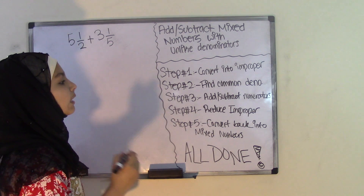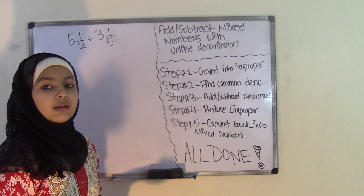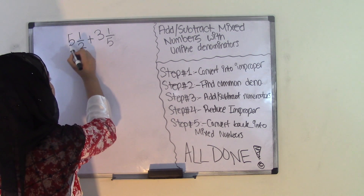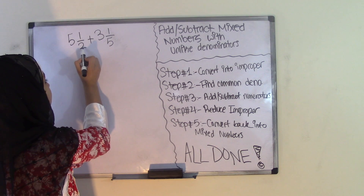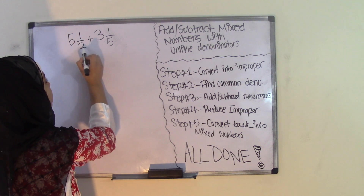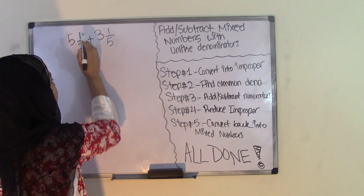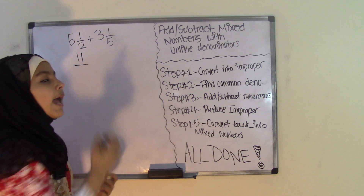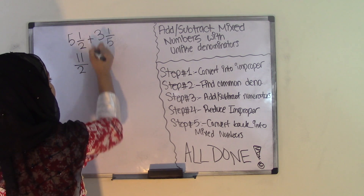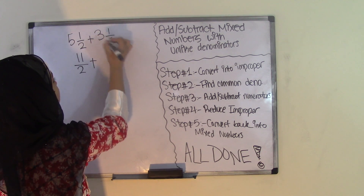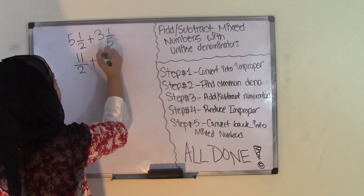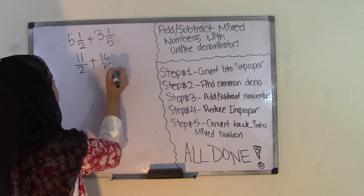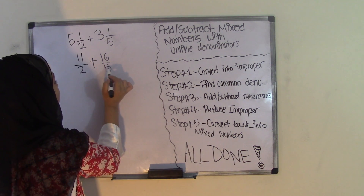Step one is convert into improper fractions. To convert a mixed number into an improper fraction, simply multiply the whole number by the denominator and then add the product to the numerator. So five times two is ten, plus one is eleven — eleven becomes my new numerator, and my denominator stays the same, which is two. Then three times five is fifteen, plus one is sixteen, keeping the same denominator of five. Now I have my two improper fractions: eleven over two plus sixteen over five.